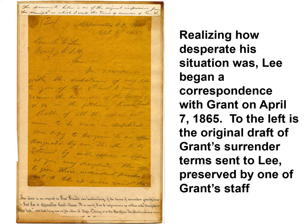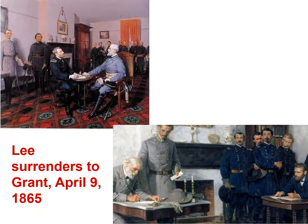Realizing that his situation was desperate at Appomattox Courthouse, Lee began a correspondence with Grant on April 7th, 1865. To the left is the original draft of Grant's surrender terms sent to Lee, preserved by one of Grant's staff. Lee sent out a messenger saying he wanted to negotiate. There was some negotiation by letters, and then they agreed to meet. Grant and Lee agreed to meet on April 9th, 1865, at Wilmer McLean's farmhouse. McLean was actually a man who had been living in Manassas, Virginia, where the Battle of Bull Run took place. He'd previously fled to get away from the war, settling in southwestern Virginia at Appomattox — and now the war was literally going to end in his front parlor.